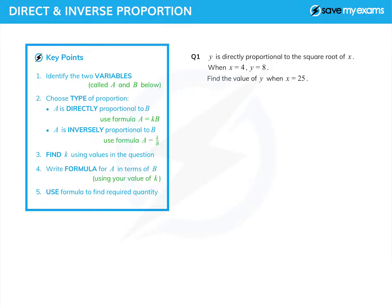On this first one, identify the variables: y is a and the square root of x is b. I've chosen the type of proportion - it's directly proportional - so I can write down that y equals k times root x. That's a equals k times root b.